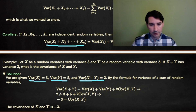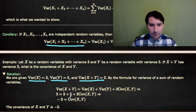Plugging in, we get 2 equals 3 plus 5 plus 2 times the covariance of XY. That gives us 2 minus 8 equals negative 6, and dividing by 2 gives negative 3. Therefore, the covariance of X and Y is negative 3.